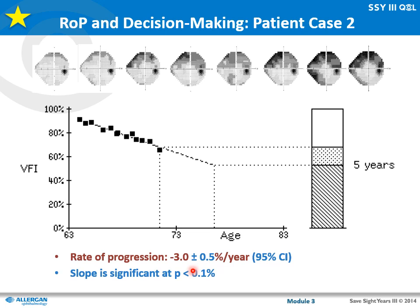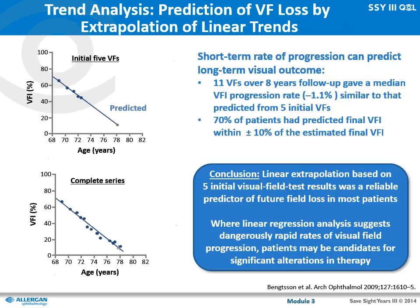In this example the slope is minus 3 percent, which is the borderline — if it is more than that you need to change your treatment. This study recorded the visual field index over eight years with 11 fields done. They used the first five years to draw the visual field index regression line and then assessed how accurately it predicted future results. They found that 70 percent of patients had a predicted final visual field index within plus or minus 10 percent of the estimated value.